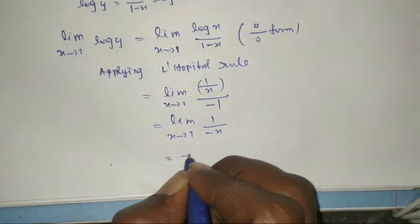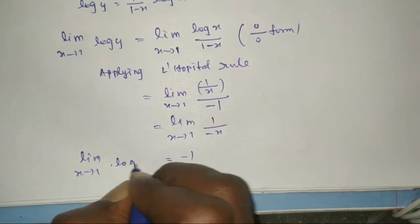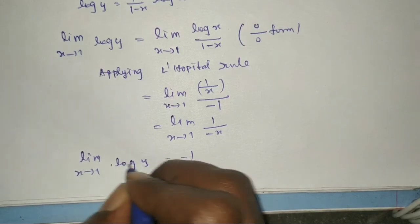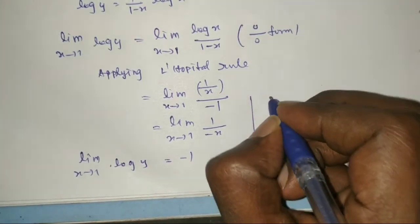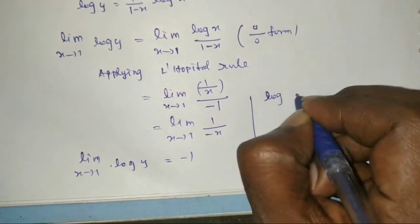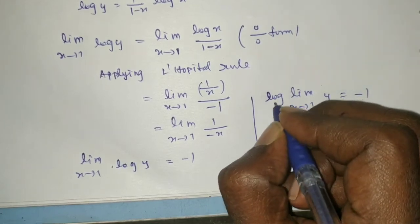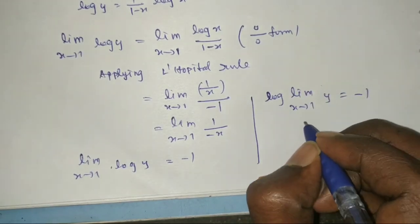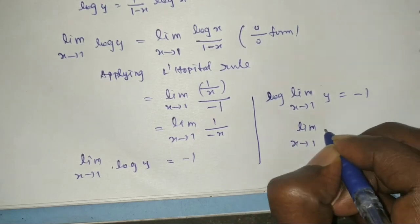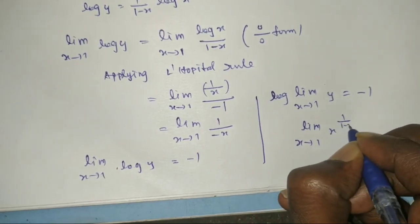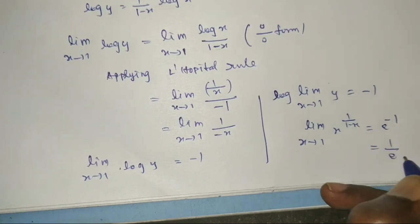So the limit as x tends to 1 of log y equals -1. Therefore, the limit as x tends to 1 of y equals e^(-1). That means the limit as x tends to 1 of x^(1/(1-x)) equals e^(-1), and e^(-1) can be written as 1/e. That is the answer.